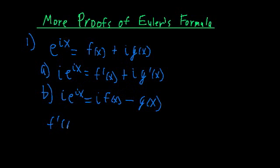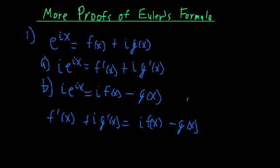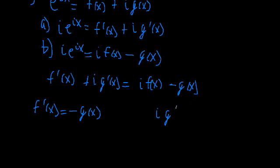So by the transitive property, since both expressions equal I times E to the IX, the two right-hand sides must be equal to each other. We can say that F prime of X plus I times G prime of X is equal to I times F of X minus G of X. Here we have complex expressions on the left and right-hand side — something with a real part and an imaginary part — and in order for these two expressions to be equal, the real parts have to be equal and the imaginary parts have to be equal.